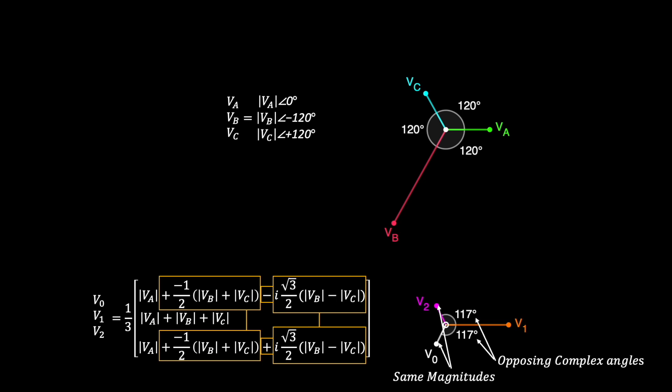The zero and negative sequence phasors having equal magnitudes but opposite angles with respect to V1 is the necessary condition for the ABC phasors to have 120 degree separation.